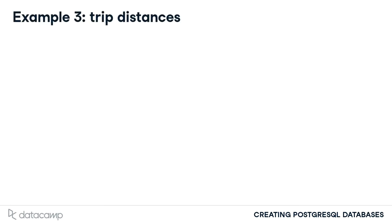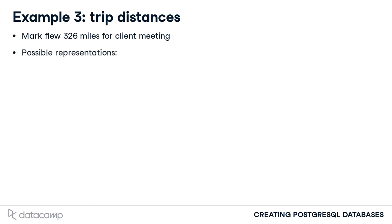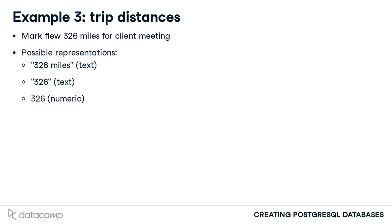A consulting company wants to track the mileage that consultants are traveling. One of the consultants, Mark, recently flew 326 miles to meet a client. This data can be represented in a number of ways. Using a text column, the unit of measurement can be directly included in the stored value. The value could be stored in a text column without a unit, or the value could be represented in its most natural form as a numeric column. The numeric representation is best here because it easily enables summation operations that might be of interest, such as summing mileage or finding trips that exceeded a certain limit.